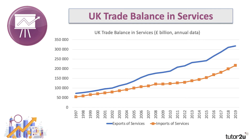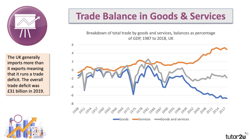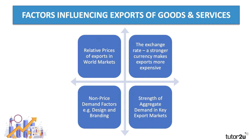Notice that the line for service exports is above the line for imports, both rising. In 2019 the UK economy ran a trade surplus of pretty much a hundred billion pounds in services — our service exports were bigger than our imports of services. The UK economy has a strong comparative advantage in many services. If we put the two together and express the data as a percentage of GDP, the blue line shows the deficit in goods, the orange line shows the surplus in services, and the gray line shows the overall balance. Overall, the UK economy does run a trade deficit — that deficit was 31 billion in 2019.